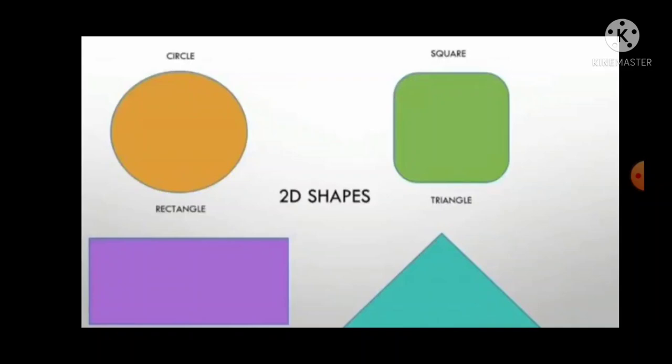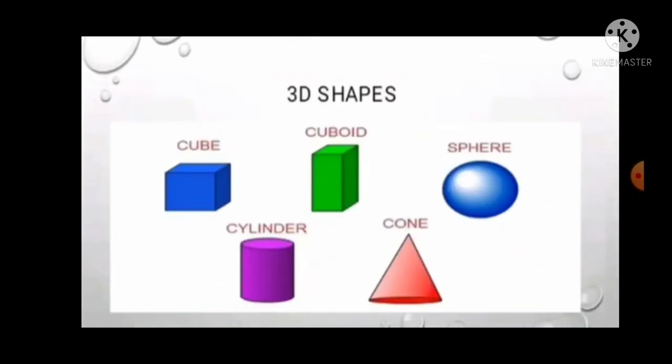So these are 2D Shapes. Next, what is it? 3D Shapes. 3D means three dimensional shape. It has three measurements: one is length, breadth, and the last one is height.